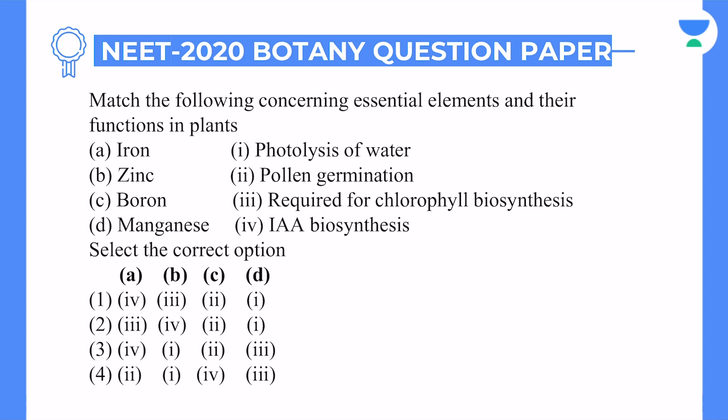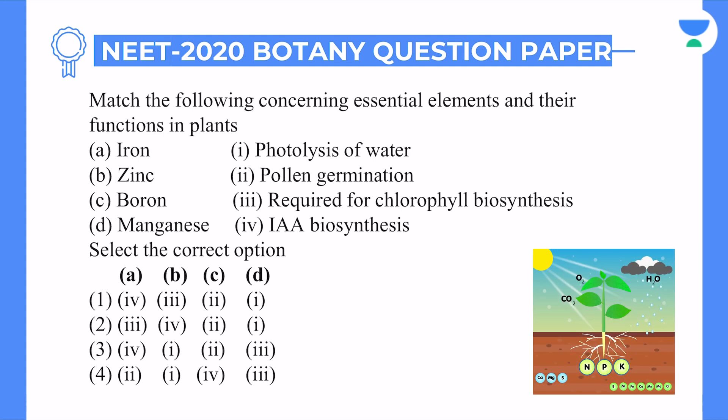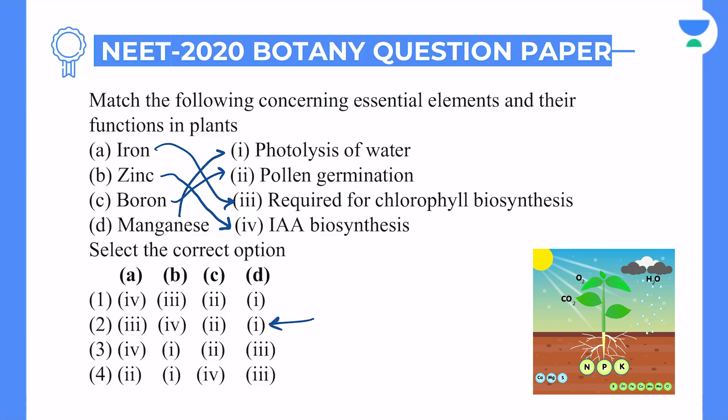Next question from mineral nutrition — match the following, find the function of each element. Zinc is very clear in auxin synthesis — B with 4 — giving option number two. Iron helps in synthesis of chlorophyll — A with 3 — correct. Boron is clear-cut in pollen germination — C with 2. And manganese, calcium, and chlorine should be for photolysis of water. Photolysis of water: in the presence of light it releases oxygen from water. So manganese goes with photolysis of water. The correct answer is option number two.